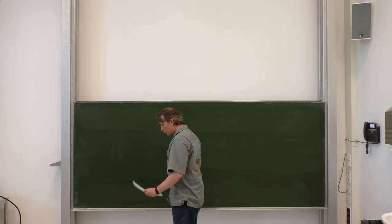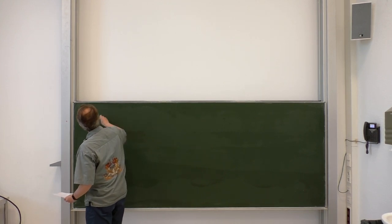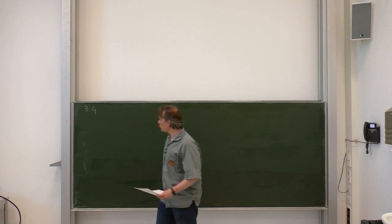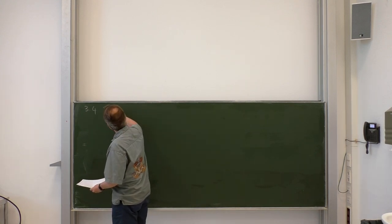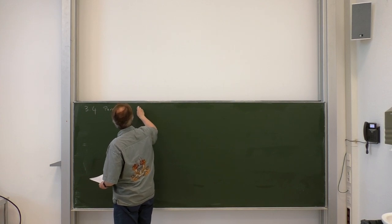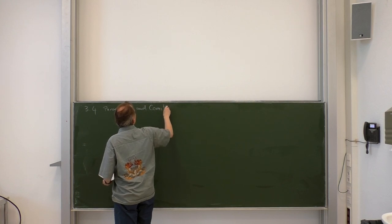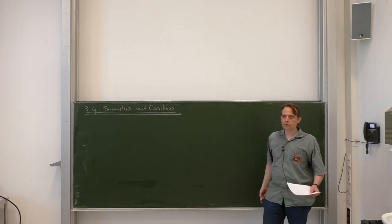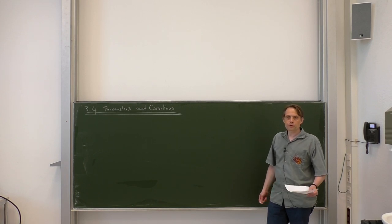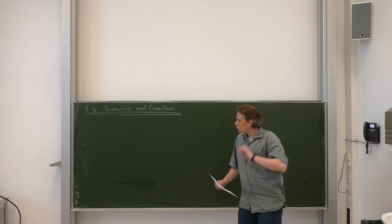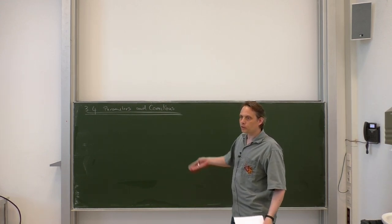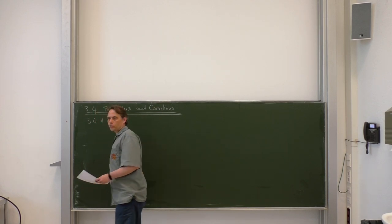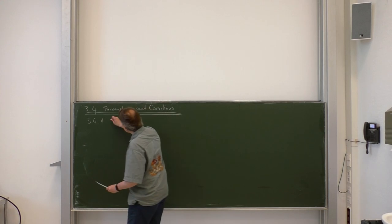Let us go to explicit loop calculations. We obviously cannot in one hour do many different loop calculations, but I want to focus on the actual parameters and corrections to them. This will close the circle to our very first lecture on the electroweak standard model, where we started with simple processes and simple parameters like weak mixing angles defined in the Z interaction, the W interaction, and so on.